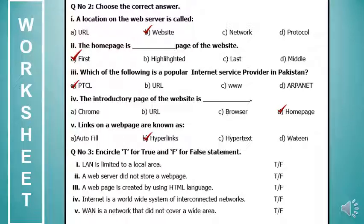Question 3 — circle T for true or F for false: LAN is limited to a local area — true. A web server does not store a webpage — false. A webpage is created using HTML — true. The internet is a worldwide system of interconnected networks — true. WAN is a network that does not cover a wide area — false, because WAN covers a wide area.